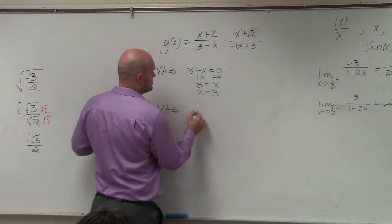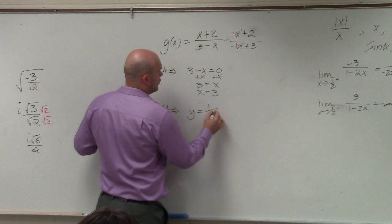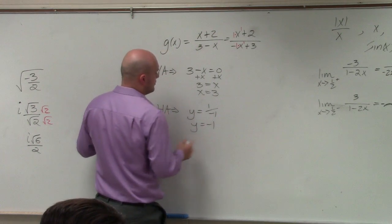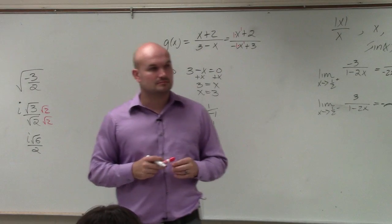So therefore, my horizontal asymptote is y equals one over negative one, which is just equal to y equals negative one. So that's it.